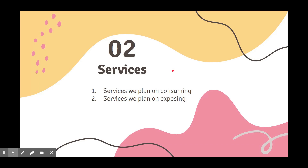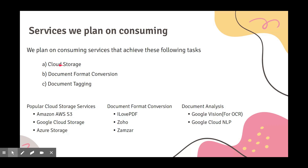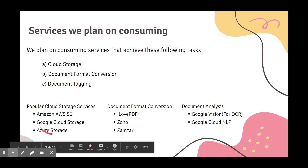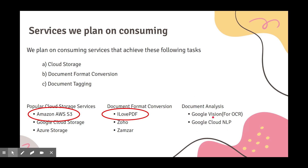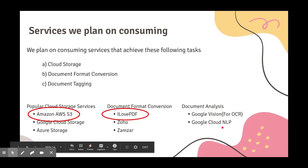Now coming to the services. We plan on consuming services which help us in the tasks of document storage, document conversion, and document tagging. Here is a list of popular cloud services. We chose Amazon AWS S3 because of its ease of usage and the pricing they offer — it is widely used and popular among many software developers. When it comes to converting document formats, we found three APIs that achieve this task. Among these, iLovePDF is the most promising service, with clear documentation and a Python library. Finally, for document analysis and tagging, we are going to use two famous APIs offered by Google: the Vision API for OCR and text retrieval, and the Cloud NLP API for creating useful tags for documents.